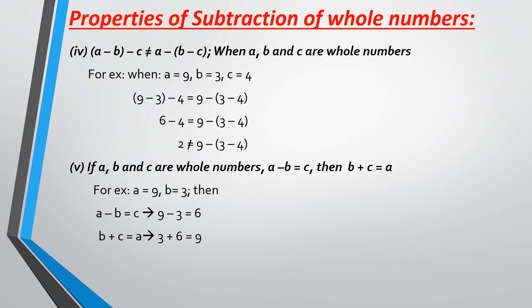The fourth property of subtraction: we have grouped just like in the addition property, but in addition, either way when you group them the left-hand side equals the right-hand side. In subtraction, it is not equal. Let's see with an example. A, B, C are whole numbers — A is 9, B is 3, C is 4. On the left-hand side: 9 minus 3 gives 6, and then 6 minus 4 gives a final answer of 2. On the right-hand side: 9 minus (3 minus 4) — but 3 minus 4 is minus 1, which is not a whole number. So clearly the left-hand side is not equal to the right-hand side.